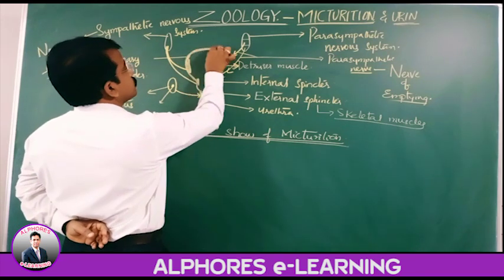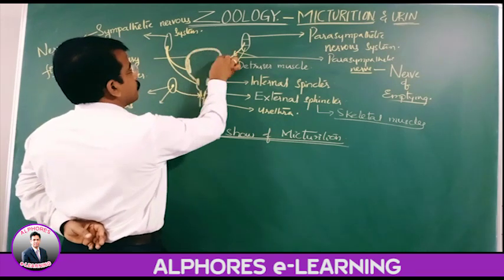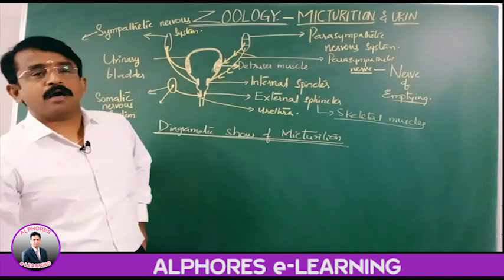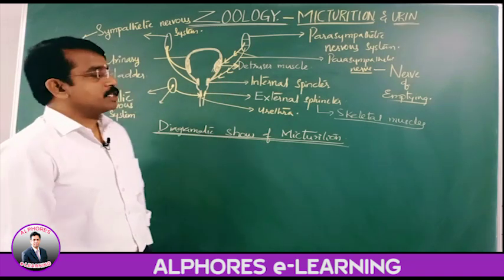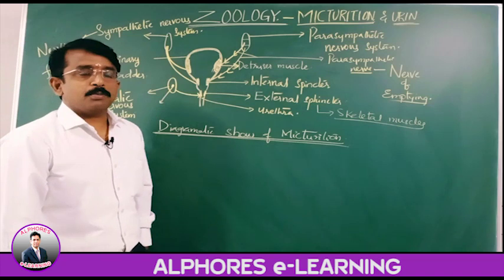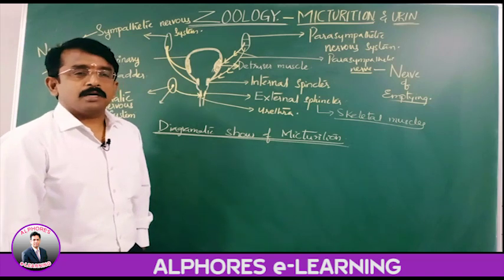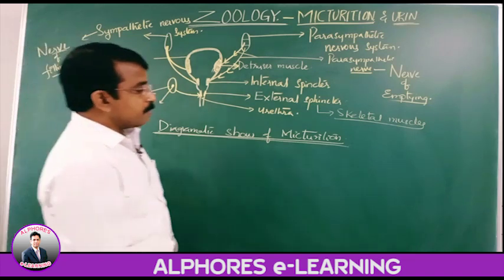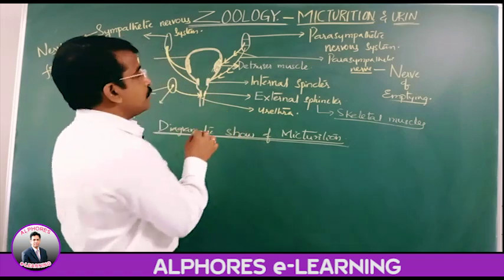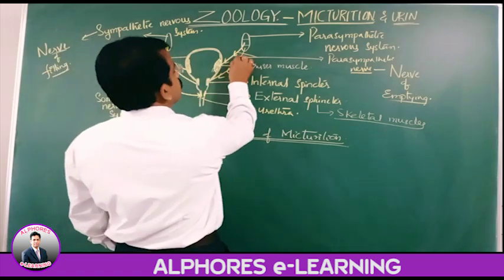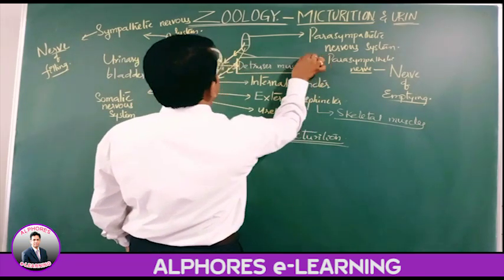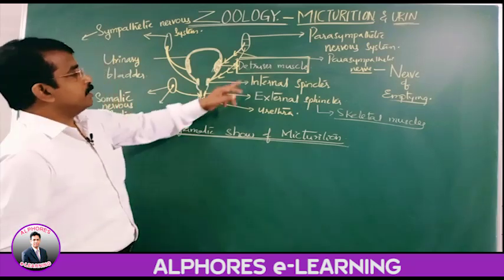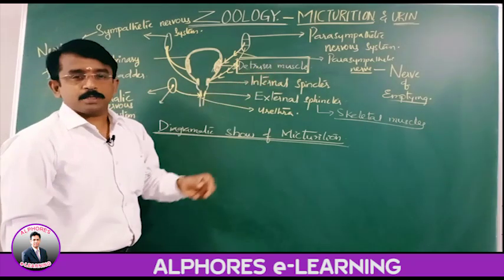The urinary bladder is a pear-shaped structure, highly muscular, and it is the part where urine is temporarily stored. The muscles present in the wall of the urinary bladder are the detrusor muscles.